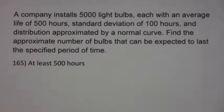A company installs 5,000 light bulbs, each with an average life of 500 hours, a standard deviation of 100 hours, and a distribution approximated by a normal curve. Find the approximate number of bulbs that can be expected to last a specified period of time.